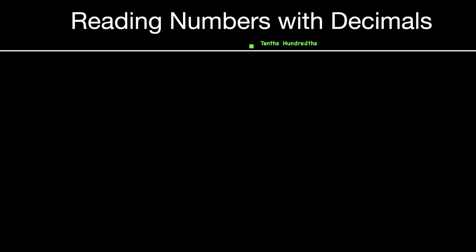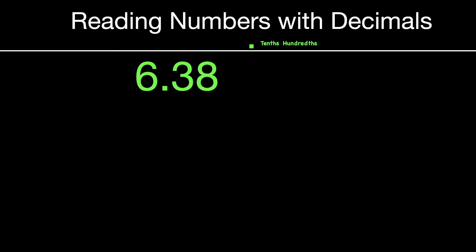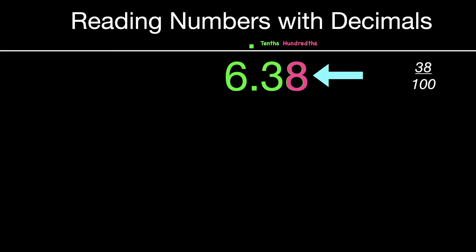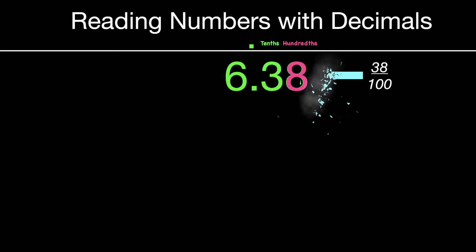When you read numbers with decimal points, the rule is that you just name the place value of the last digit. So for example, this number would read as six and thirty-eight hundredths. Notice that that eight is in the hundredths place value, and that thirty-eight there would represent thirty-eight hundredths.